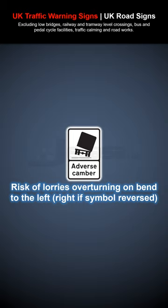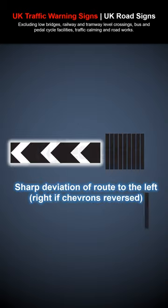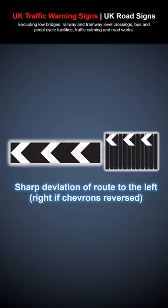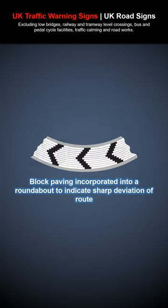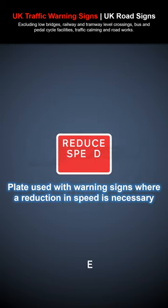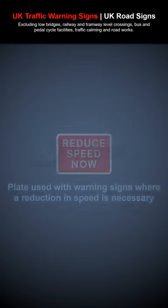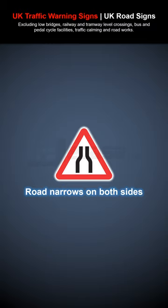Sharp deviation of route to the left or right (chevrons reversed for opposite direction). Alternative designs include block paving incorporated into a roundabout to indicate sharp deviation of route. Plate used with warning signs where a reduction in speed is necessary. Road narrows on both sides.